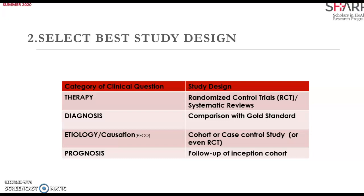In therapy, it solves the question about which treatment to administer and what might be the outcome of different treatment options. For most therapy questions, one may want to look for the best evidence — namely a randomized controlled study. And if the study is double-blind, that would be even better.